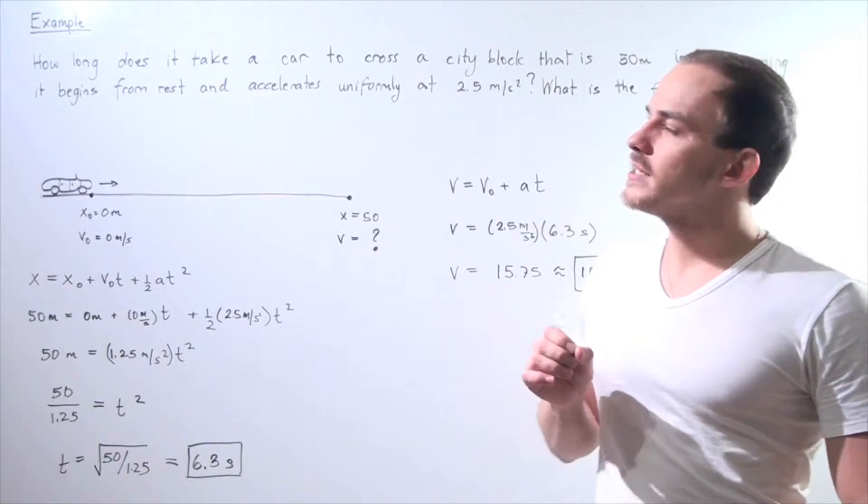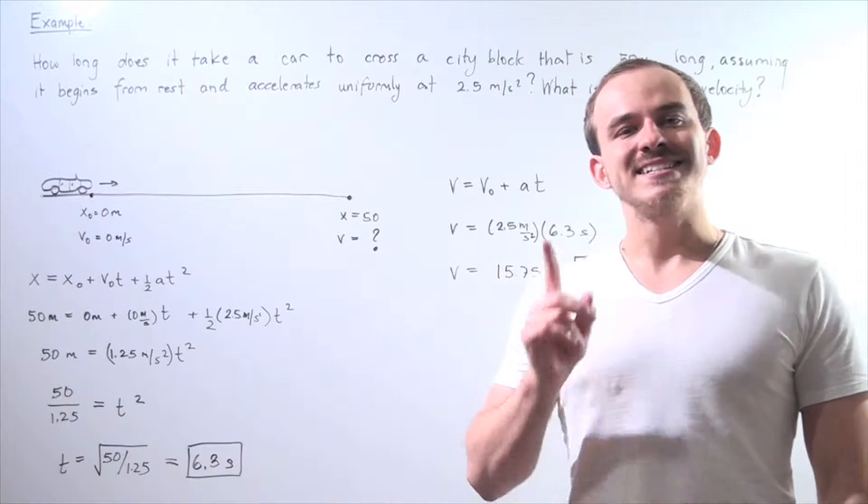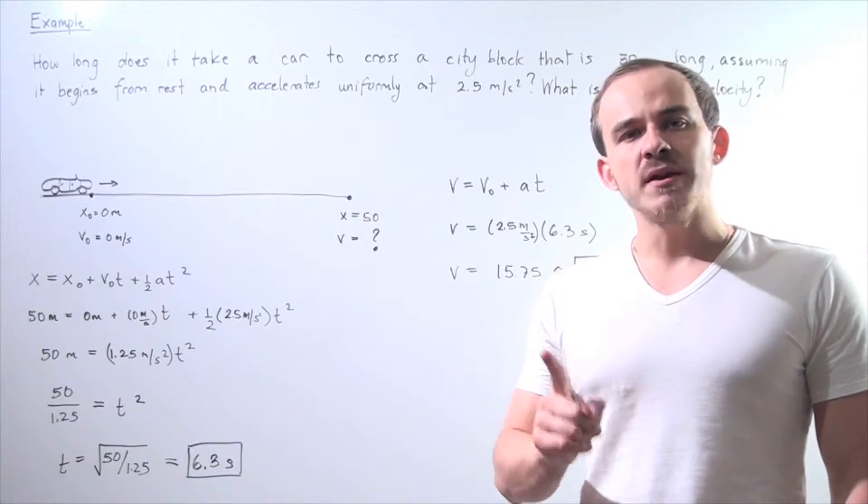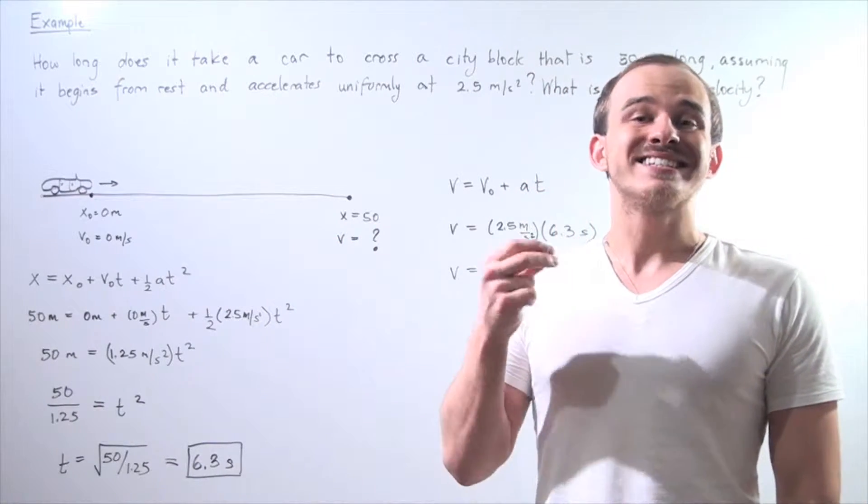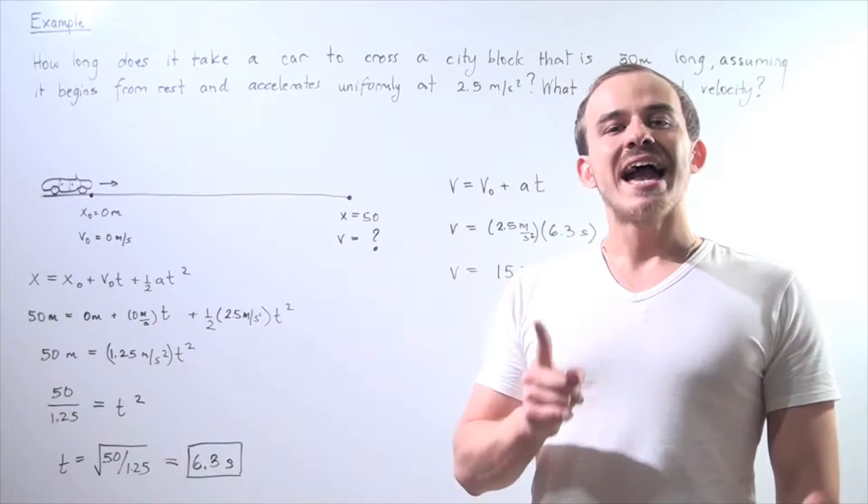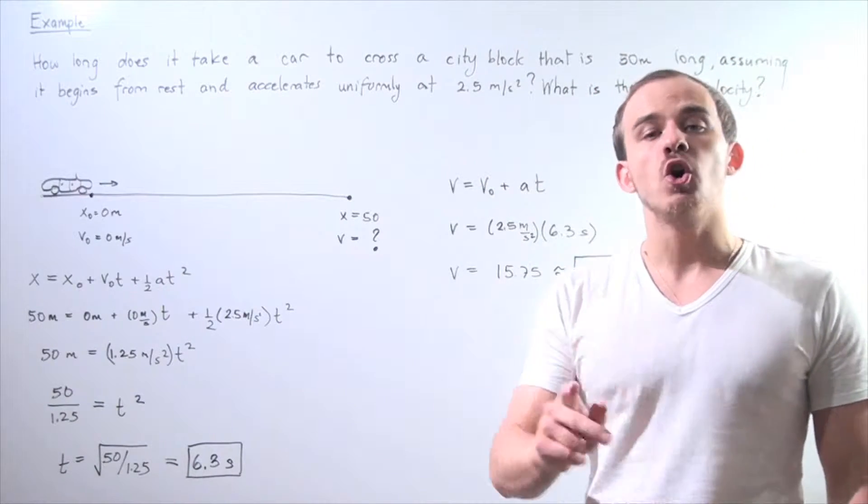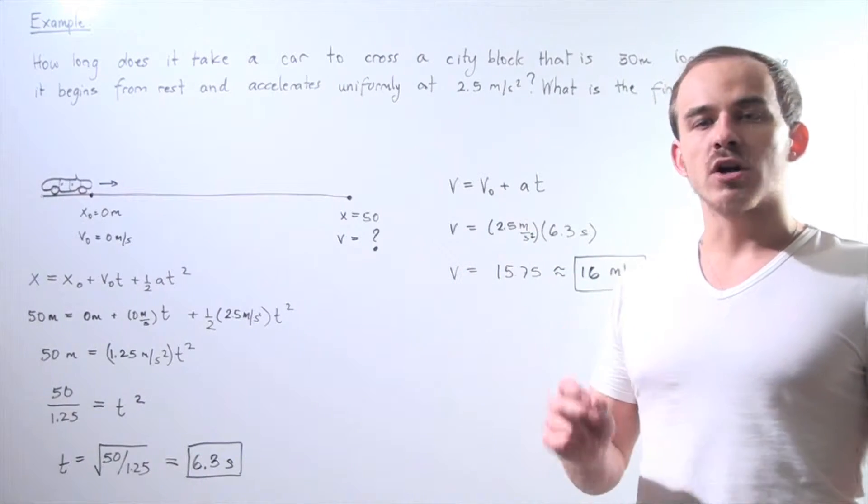Let's look at the following example. How long does it take a car to travel a city block that is 50 meters long, assuming that our car begins from rest and accelerates uniformly at a rate of 2.5 meters per second squared? Also, what is the final velocity of our car at the 50-meter mark?